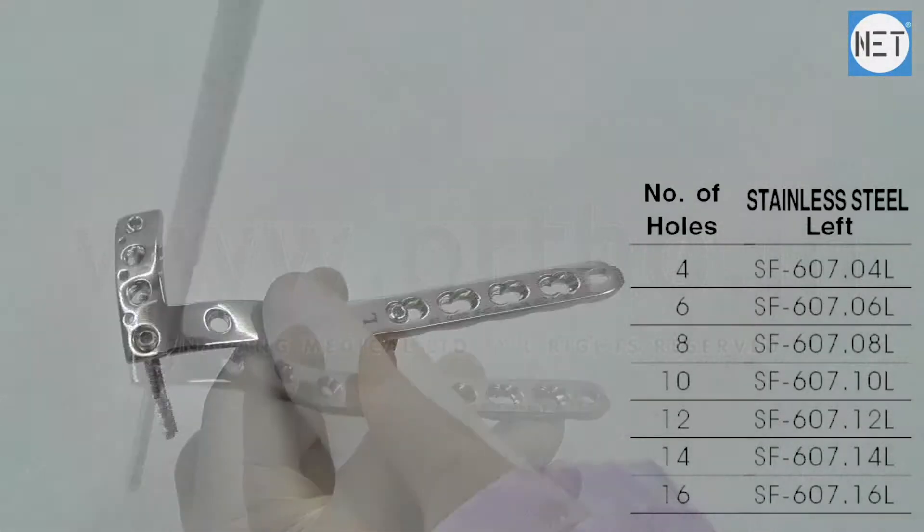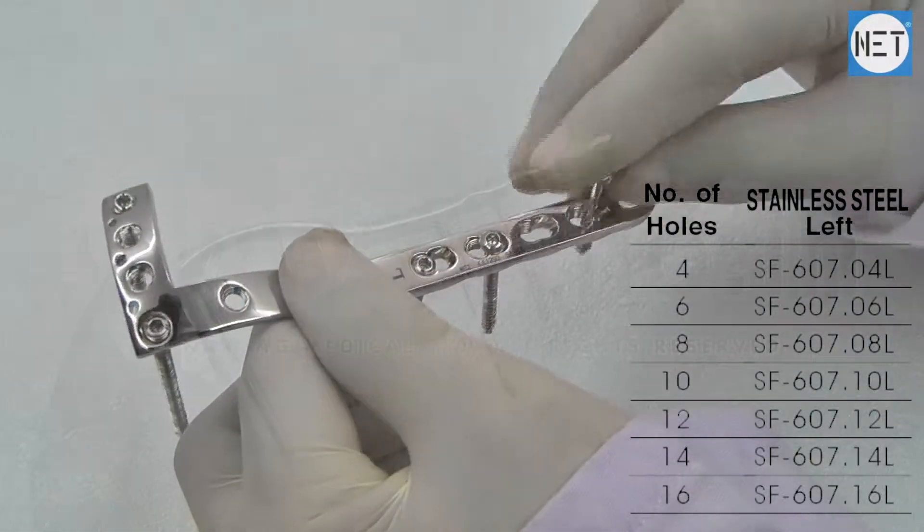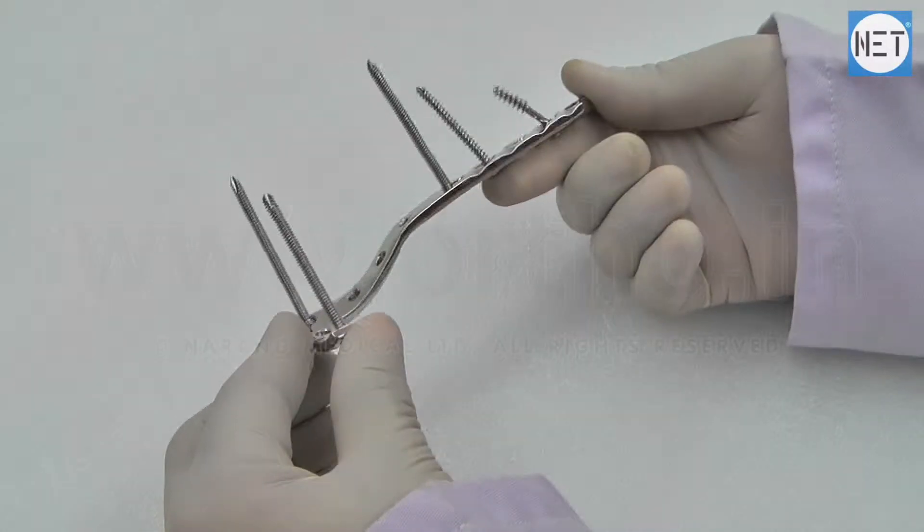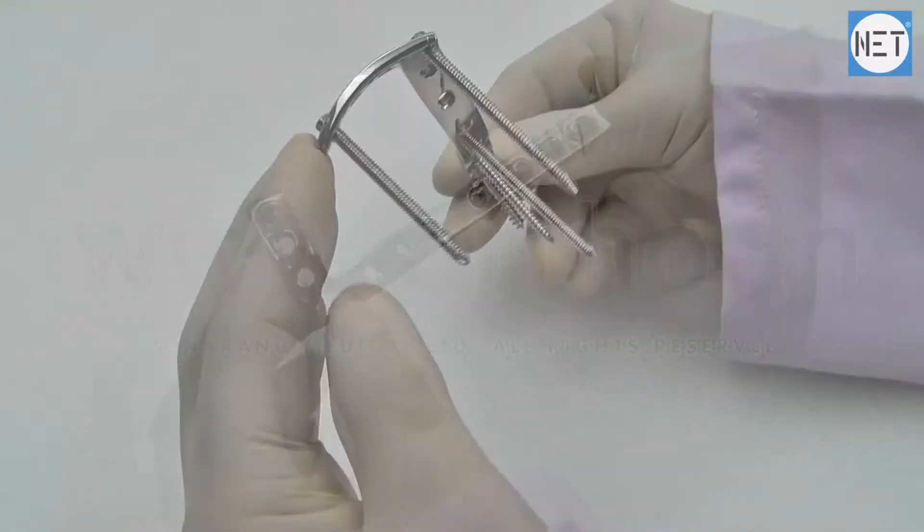These plates are available with number of holes varying from 4 to 16 and are designed for both right and left tibia. These are available in stainless steel and titanium.